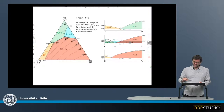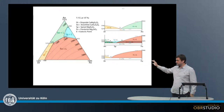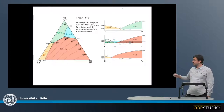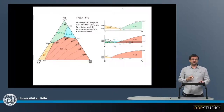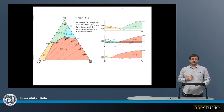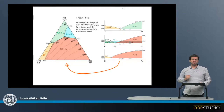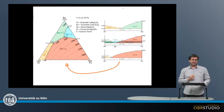So if you want to understand the crystallization and formation of the chondrules within these mafic systems, you can use phase diagrams such as these ternary phase diagrams: diopside, anorthite, and forsterite. Now here to the right are the corresponding binary phase diagrams which form the sides of this ternary diagram. For example, this diopside-forsterite binary diagram here forms the bottom side of this ternary phase diagram.